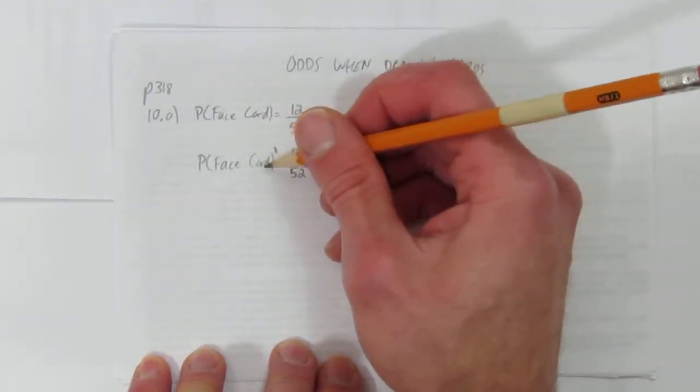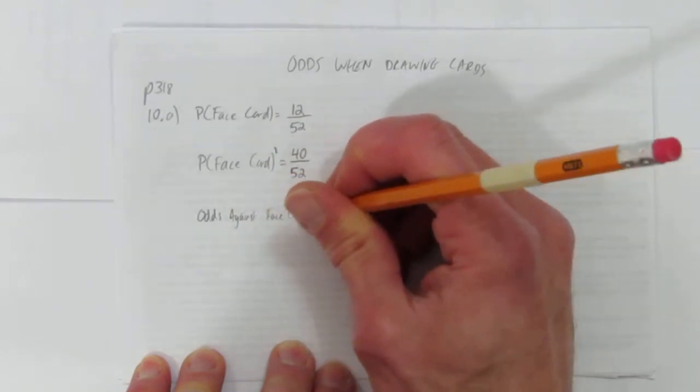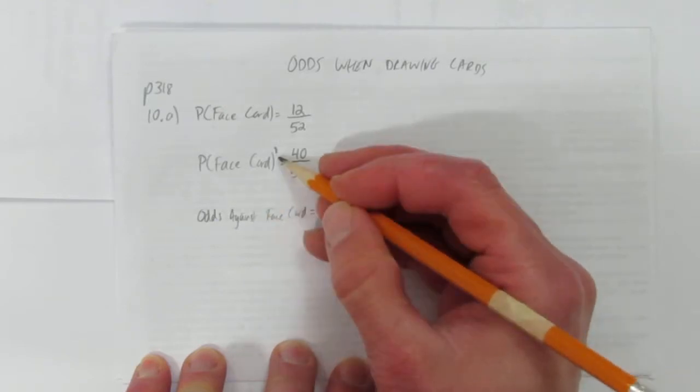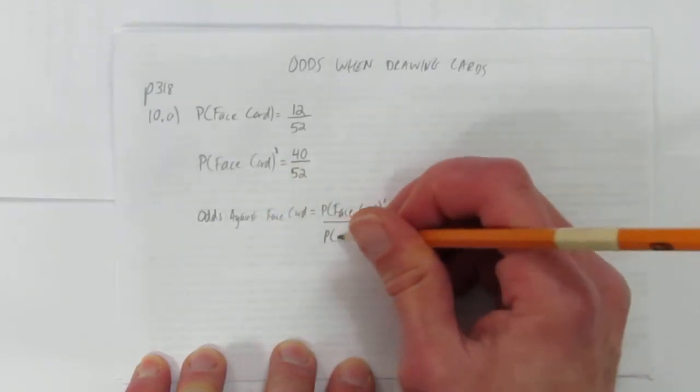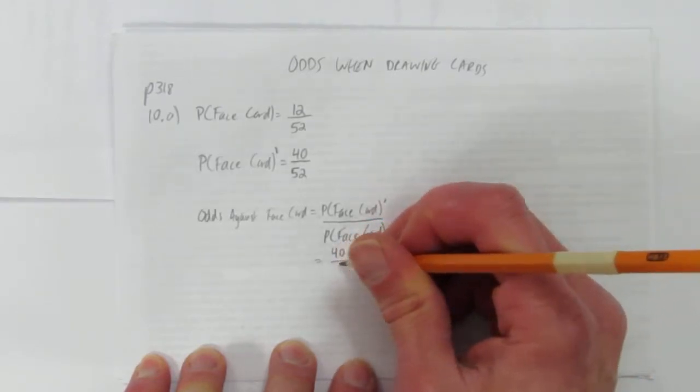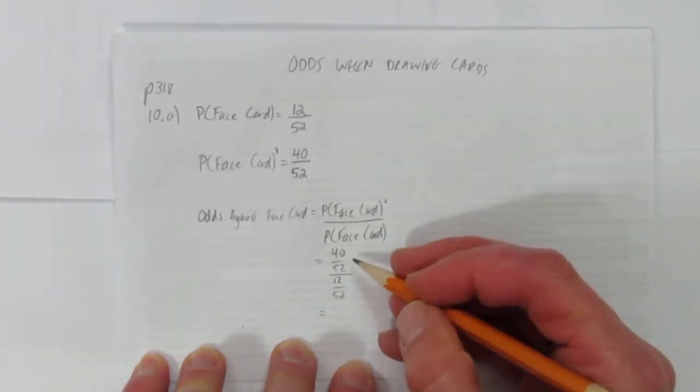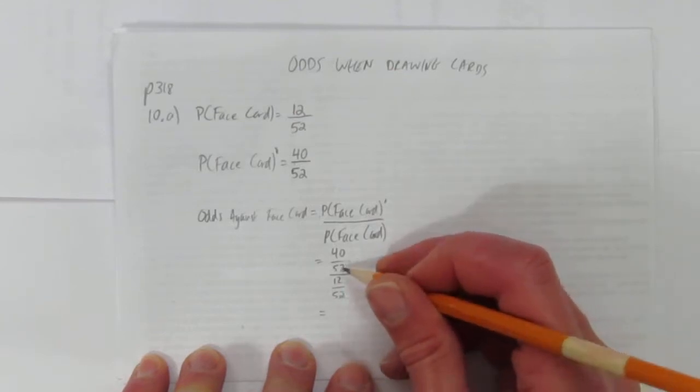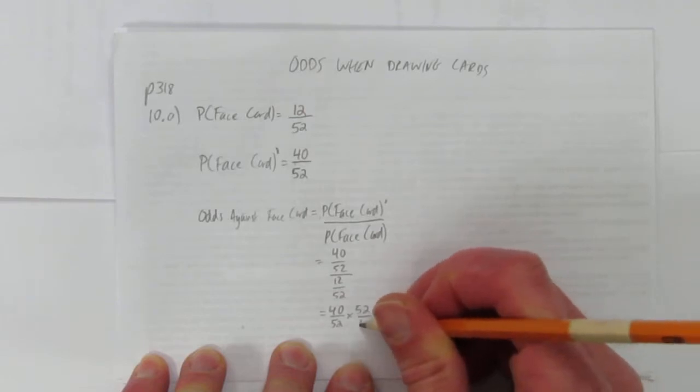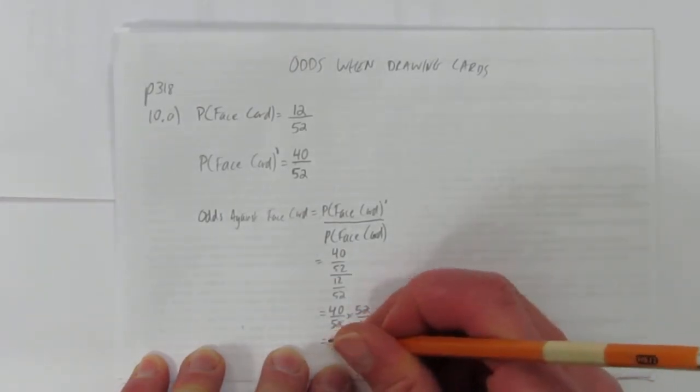So now we have the probability of getting a face card and the probability of not getting a face card, the odds against a face card are just equal to the probability of not getting a face card. This is because we're doing the odds against. So we start with the probability of not getting it over the probability of getting it, which in this case is probability of not getting a face card, 40 out of 52, divided by probability of getting a face card, 12 out of 52. Now what's good here is we're dividing a fraction by a fraction.